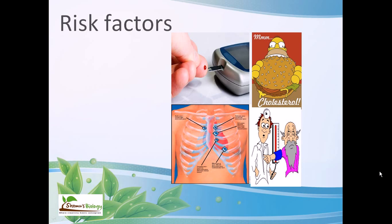Now let's talk about the risk factors associated with angina. In angina, there is a problem of vessel blockage due to plaque formation or blood clotting. If you have a high percentage of cholesterol in your body, that can cause problems. Certain other diseases, genetic disorders, or bodily malfunctions can also cause problems. Atherosclerosis can make the situation worse.